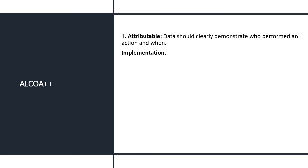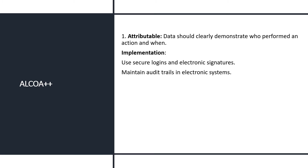For implementing Attributable: first, use secure logins and electronic signatures so you can identify who performed the activity and when. Next, maintain audit trails in electronic systems so you can track person traceability. Also, for manual processes such as logbooks or manual sheets, record the operator's name with signature and timestamp.